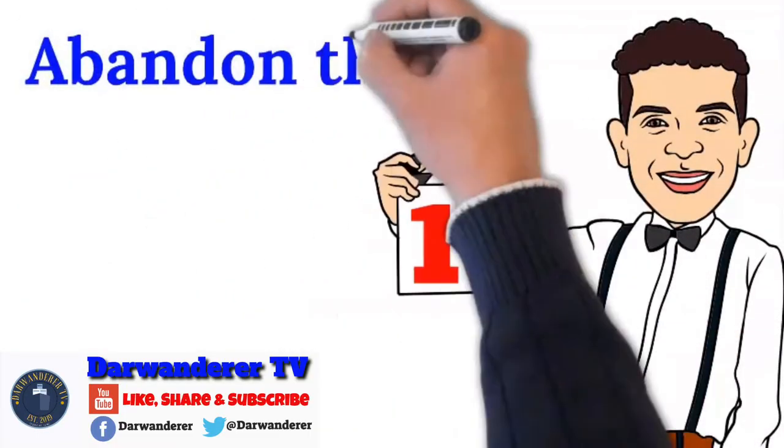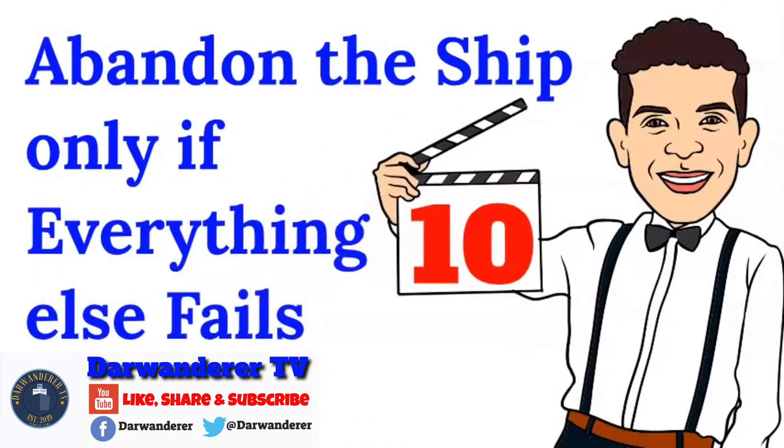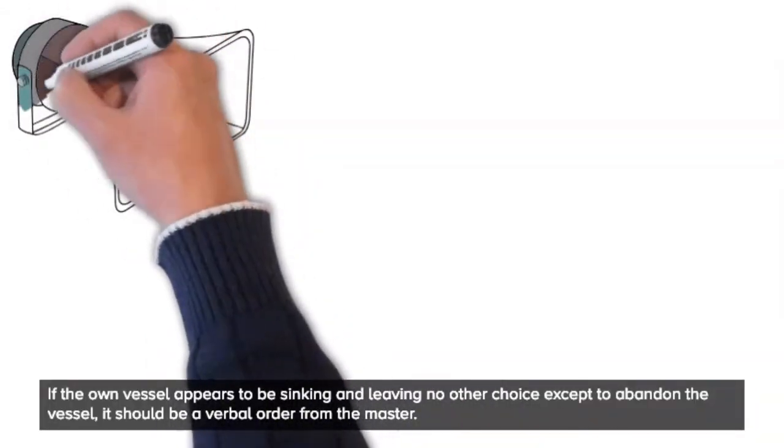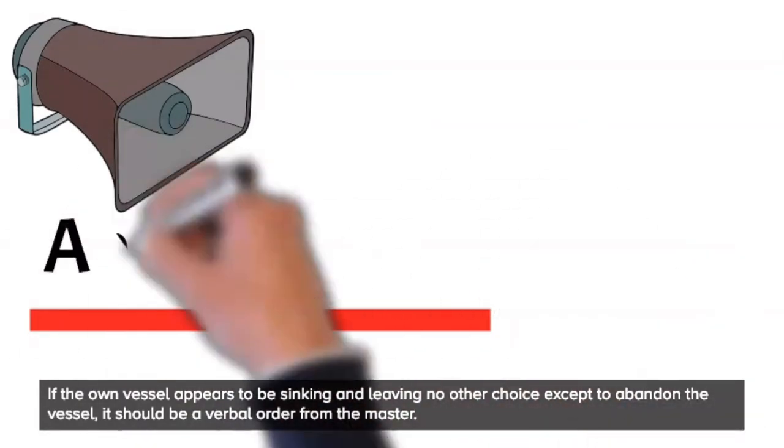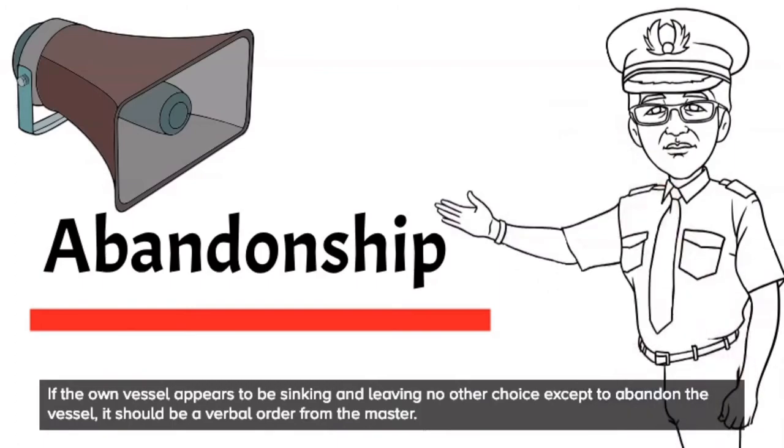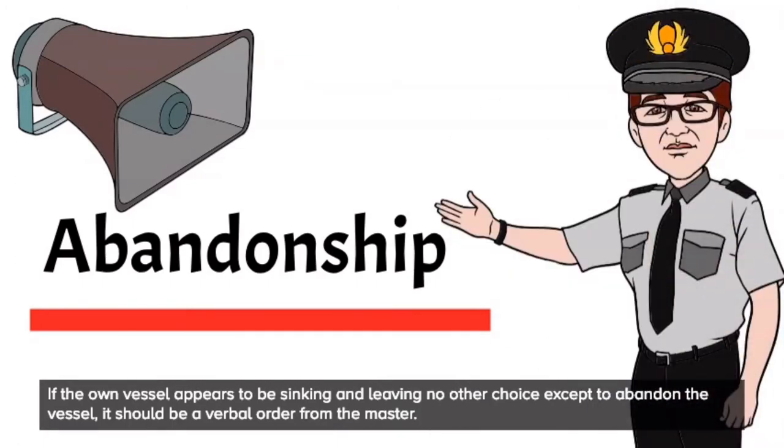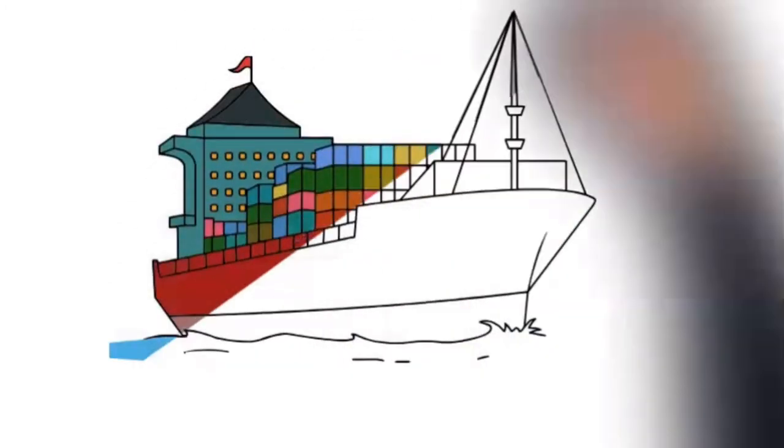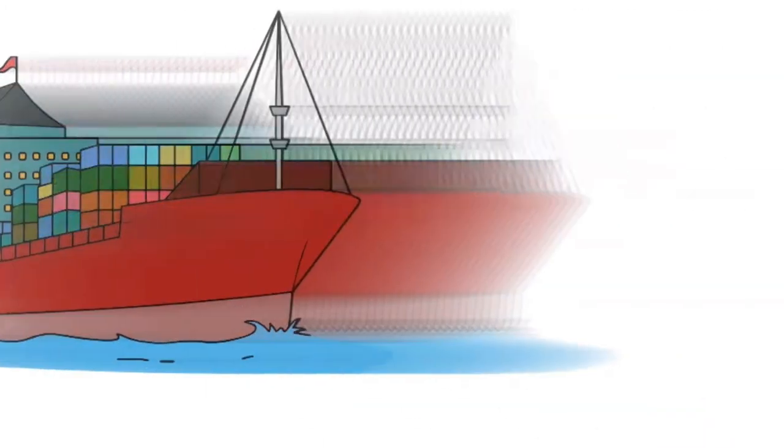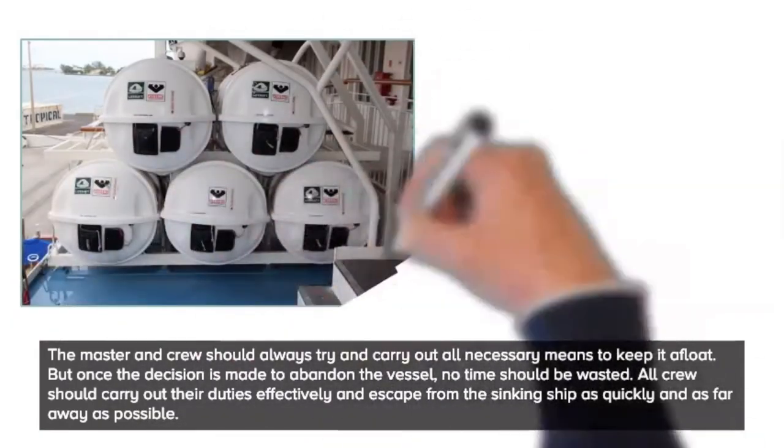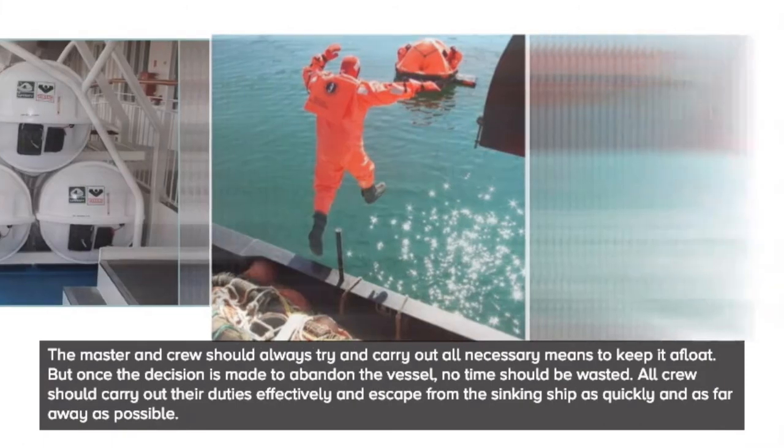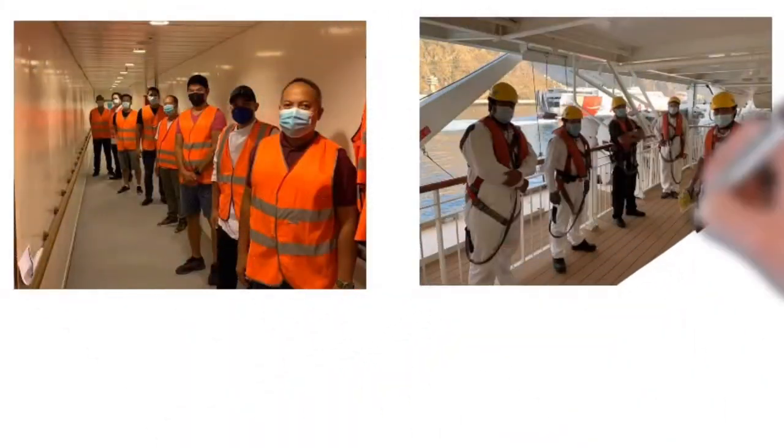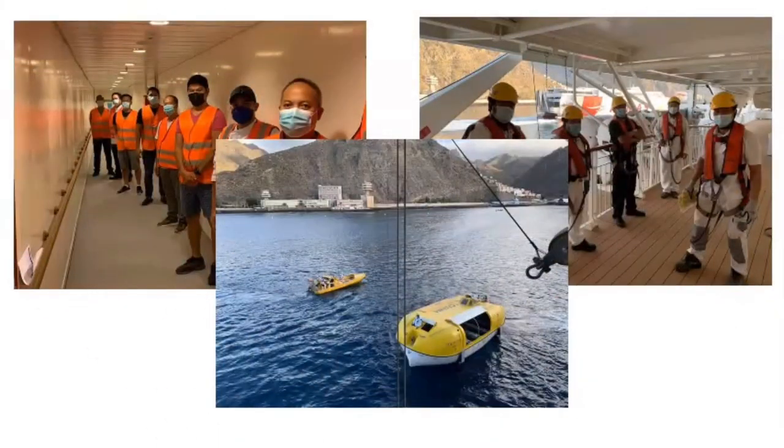10. Abandon the ship only if everything else fails. If the own vessel appears to be sinking and leaving no other choice except to abandon the vessel, it should be a verbal order from the master. It should be always kept in mind that a ship is the best lifeboat. The master and crew should always try and carry out all necessary means to keep it afloat. But once the decision is made to abandon the vessel, no time should be wasted. All crew should carry out their duties effectively and escape from the sinking ship as quickly and as far away as possible.